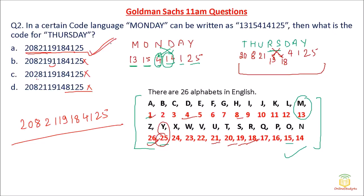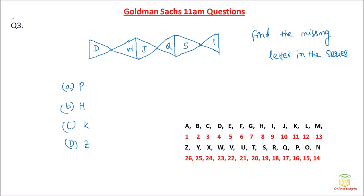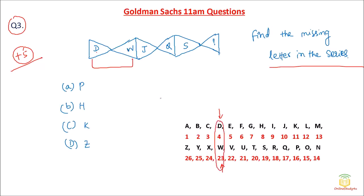Question number 3: Find the missing letter in the series. D and W — the opposite of D is W. J and Q — the opposite of J is Q. S and ? — the opposite of S is H. So the missing letter is H, and option B is the correct answer. A very simple question, earning plus 5 marks in the Goldman Sachs examination.